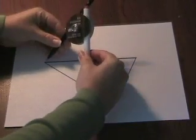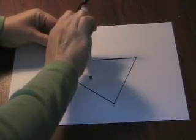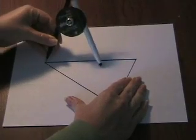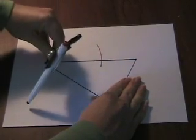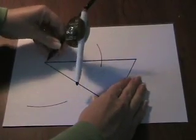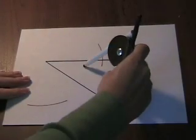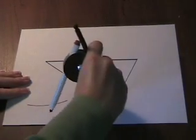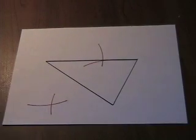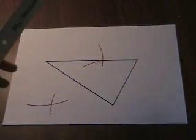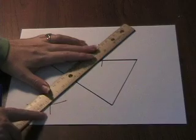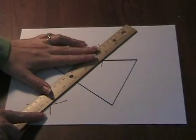Place the point of the compass on the vertex and open it more than halfway across the segment, arc above and below the segment. With the same compass setting, place the point of the compass on the other vertex and arc above and below. Connect the intersection of the arcs through the segment.